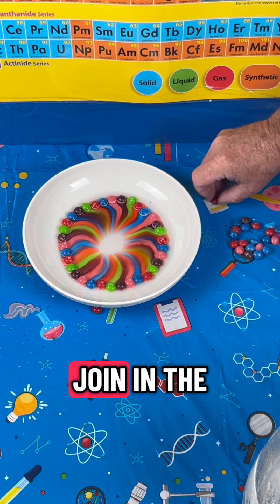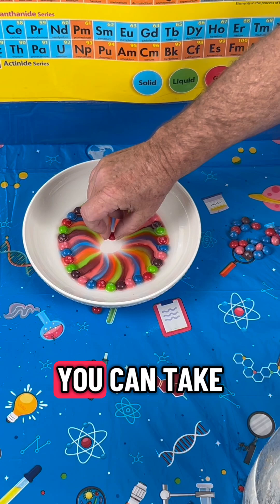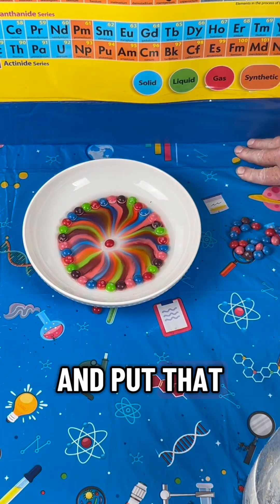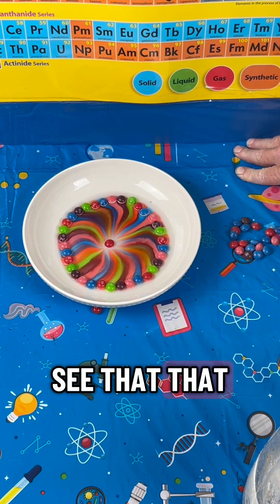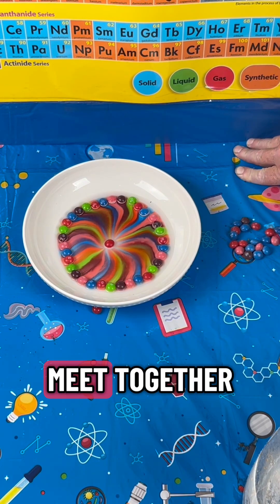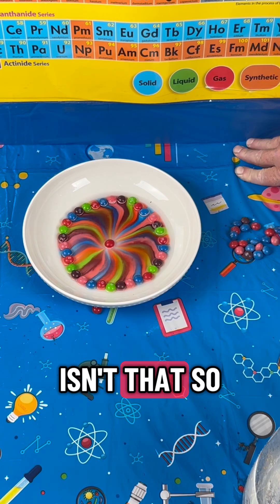Now, if you want to get them to all join in the middle a little bit faster, you can take one last Skittle and put that right in the middle. You can see that helps the colors all meet together. Isn't that cool?